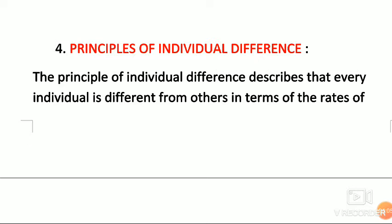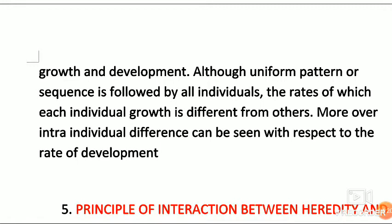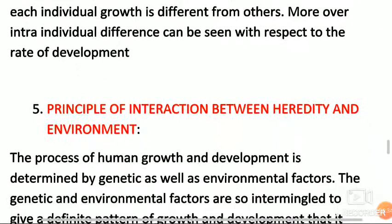Principle number four is the principle of individual difference. This principle describes that every individual is different from others in terms of rates of growth and development. Although a uniform pattern or sequence is followed by all individuals, the rate at which each individual grows is different. Moreover, intra-individual differences can also be seen with respect to the rate of development.